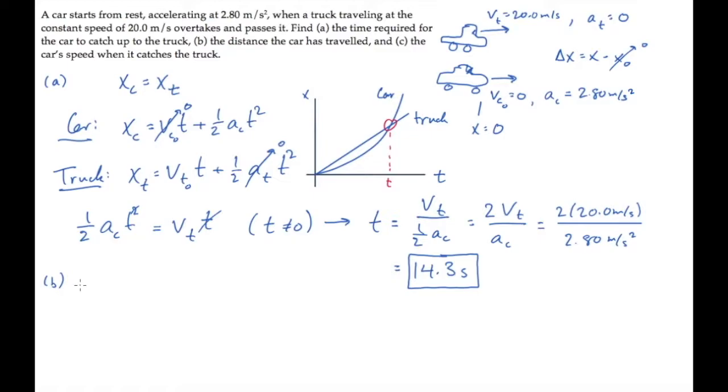Part b asks us for the distance the car has traveled by the time it catches up to the truck. We can find this using the equation of the car's position and substituting the time that we just found, and that result gives us 286 meters.